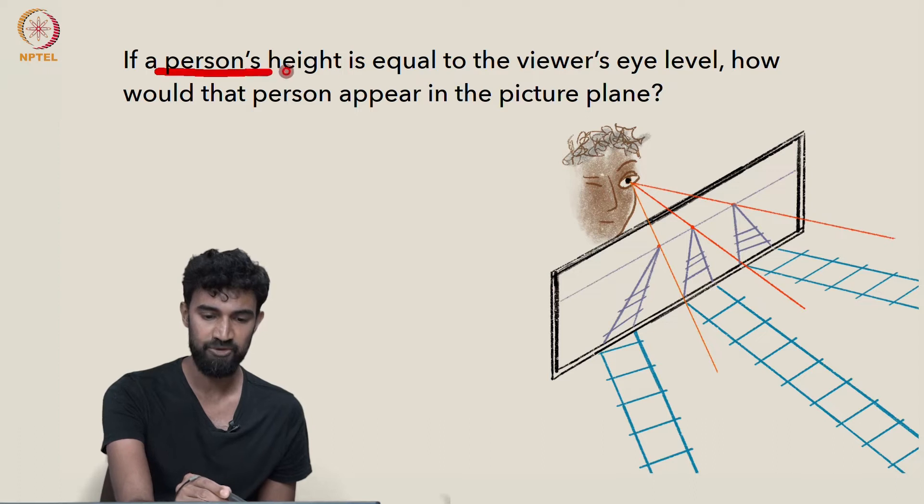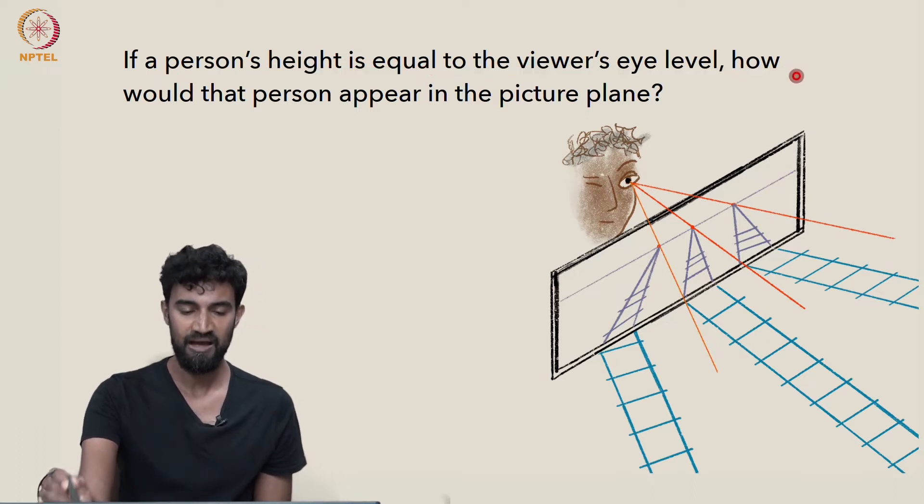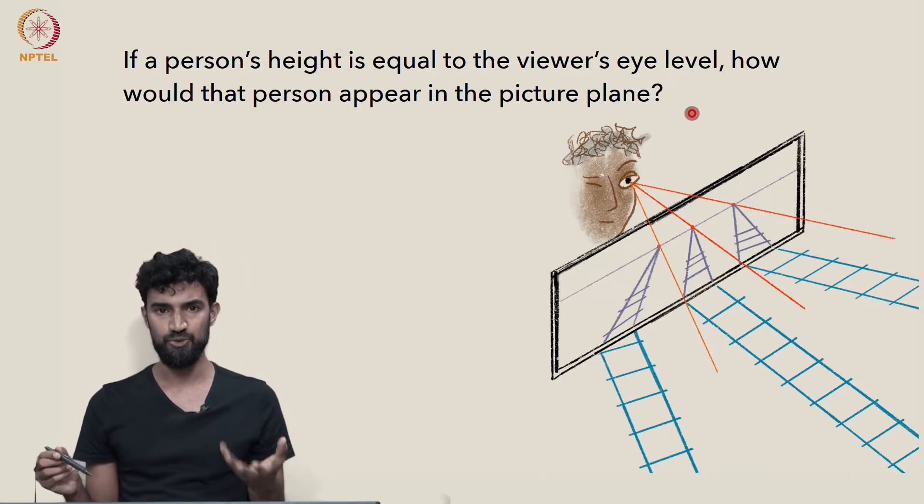So here's a question. If a person's height is equal to the viewer's eye level, how would that person appear in the picture plane, to the viewer?